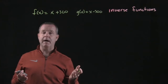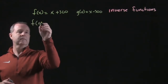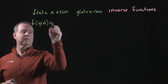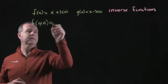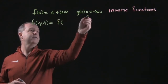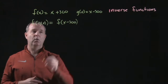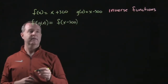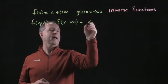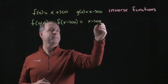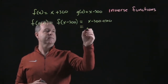Now let's take the composite of those two functions. f of g of x means I take g of x, which is x minus 300, and run that through f of x. That becomes x minus 300 plus 300, which just equals x.